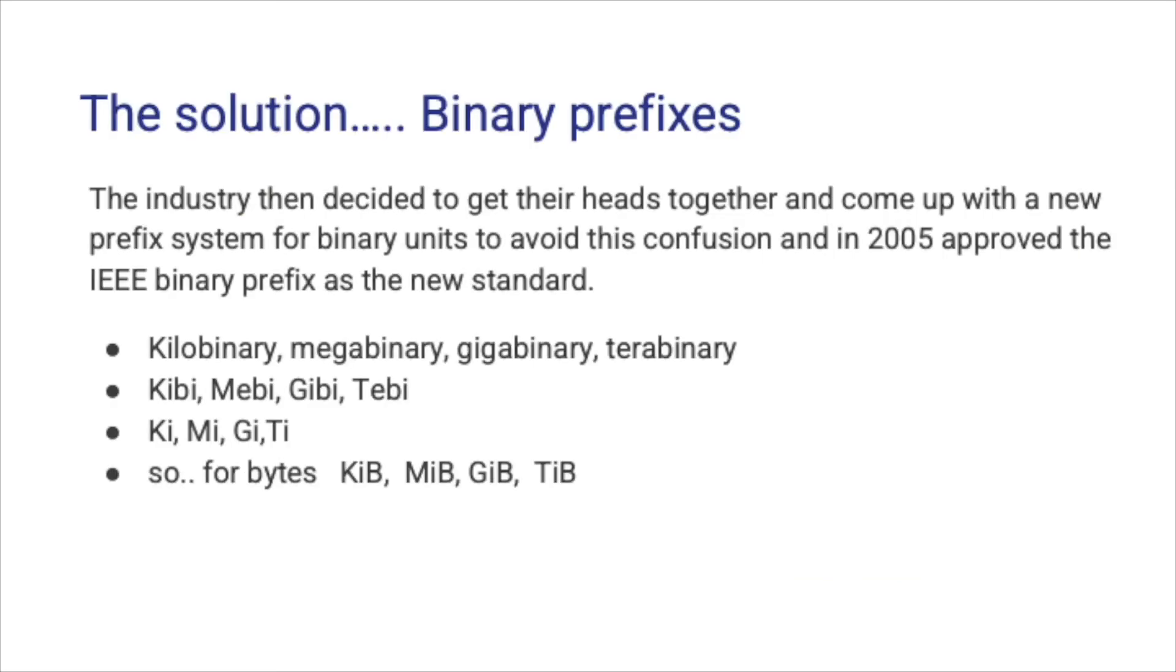So what was the solution? Well the solution was binary prefixes. The industry decided to get their heads together and come up with a new prefix system that uses binary units to avoid all of this confusion. And back in 2005, the IEEE, which is the Institute of Electrical and Electronics Engineers, came up with this new standard. They said well we're going to be using kilobinary, megabinary, gigabinary and terabinary, which in short form become kibi, mebi, gibi and tebi. The symbols are as what they are, so the bytes become, instead of kilobytes, they become kibibytes and so on.